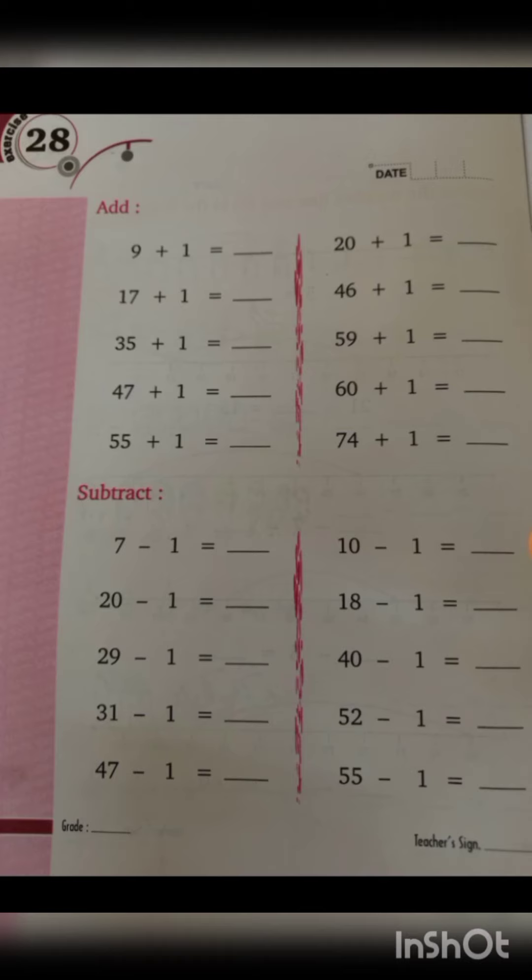Subtract. Minus 1 means backward counting. 1 step. 6, 7, 8. So before 7 comes 6. 7 minus 1, 6. 20, 19, 20, 21. So before 20, 19. 20 minus 1, 19.